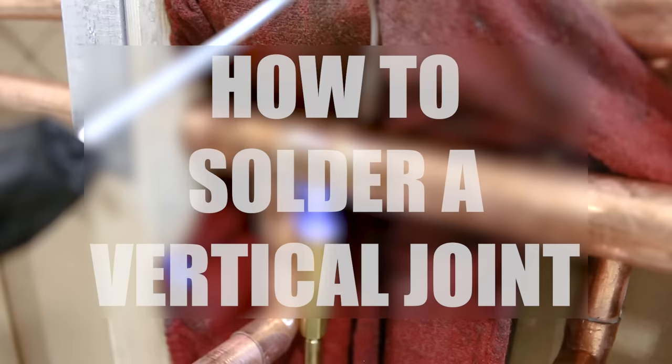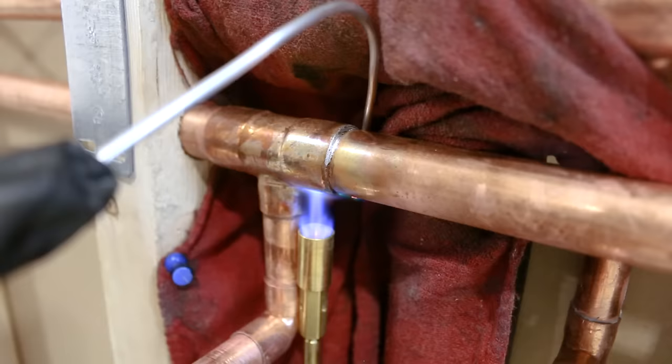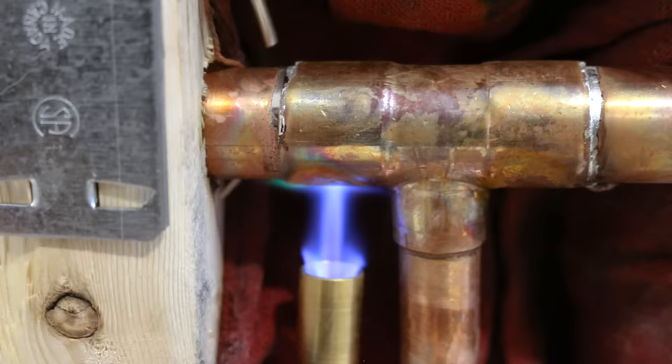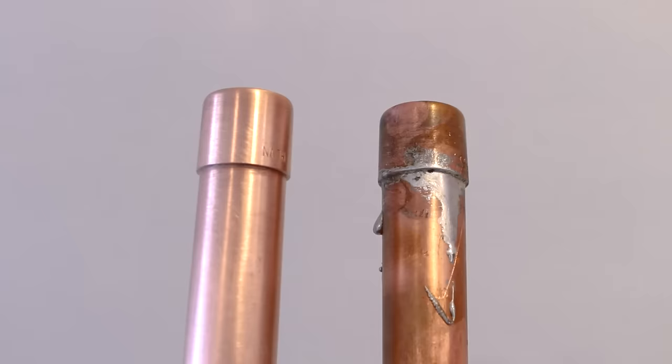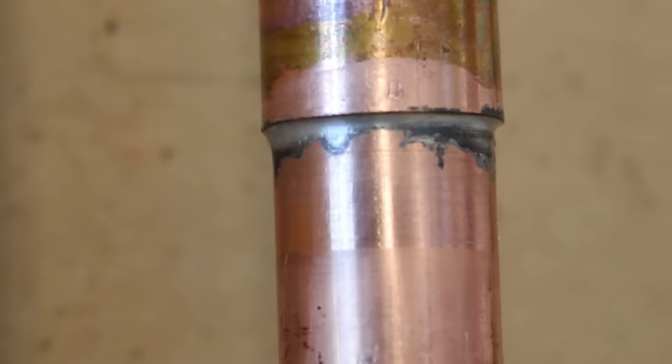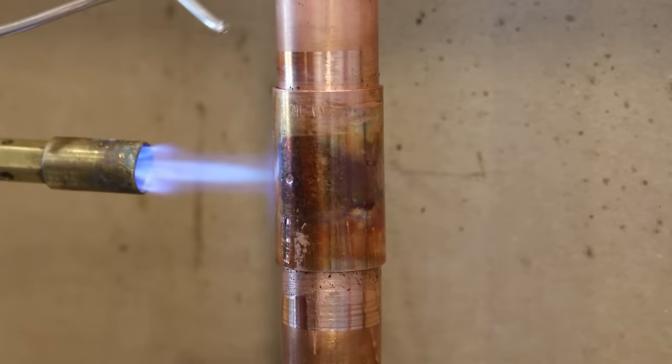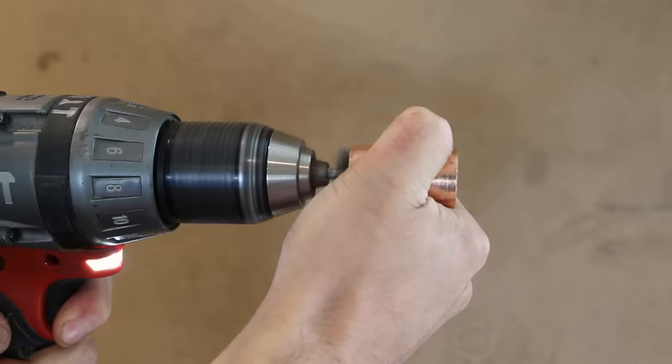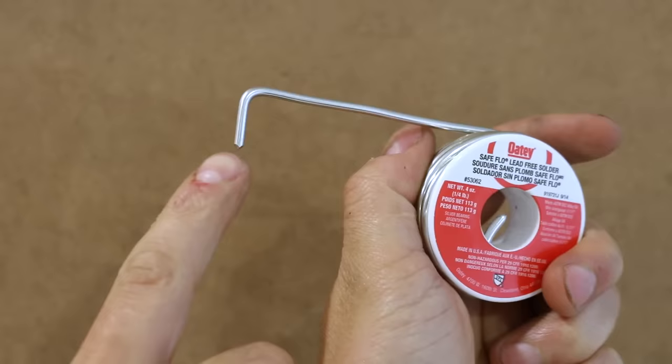What's up guys and welcome back to another video. I've been making a lot of soldering videos lately, such as how to solder in a confined space and how to solder like a pro without getting drips all over your pipes, but I've never talked about soldering a vertical joint before. In this video I'll be showing you in easy step-by-step fashion how to do it and I'll give you all kinds of cool little tricks that make it much easier. So let's get started.